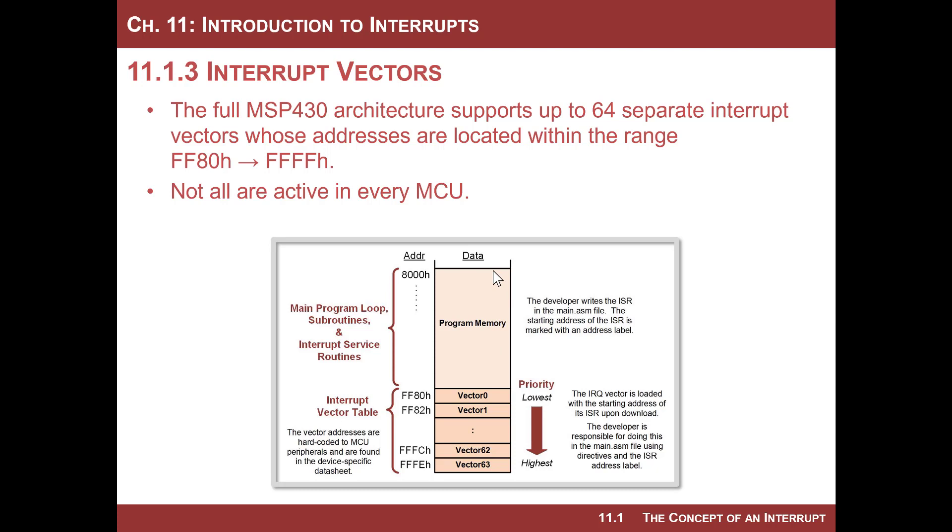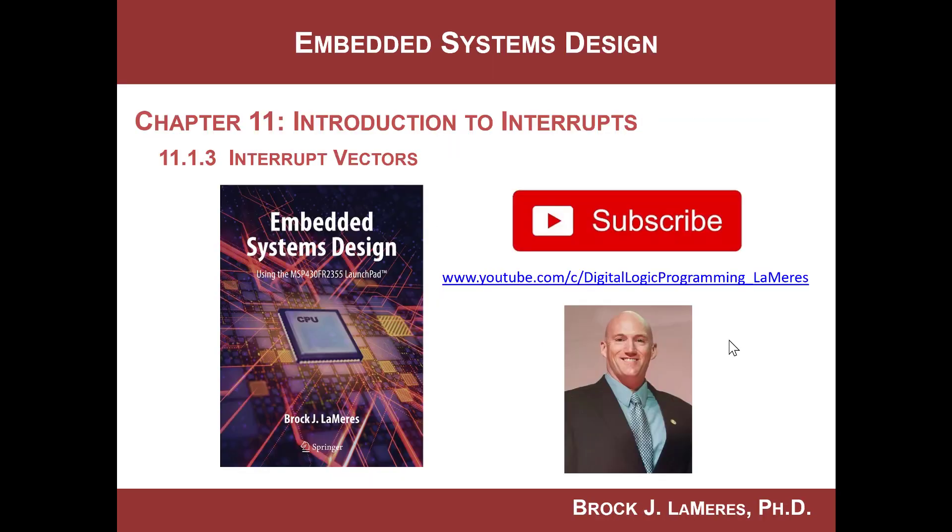MSP430 actually supports up to 64 separate interrupt vectors. And they exist in the range of FF80 down to FFFF. They are all 16-bit addresses. The MSP430 is the general architecture. It's only when you get to the specific MCU that they assign these vector locations to the actual peripherals. And also remember, not every vector address is supported in every MCU. The smaller the MCU, maybe you only have one interrupt. Maybe you only have 10 interrupts.